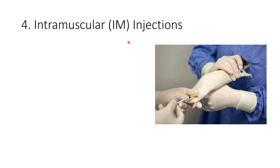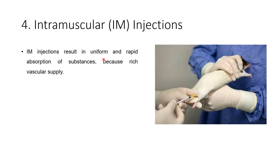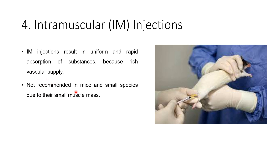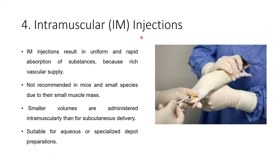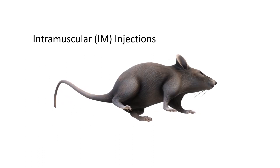The last is intramuscular injection. Intramuscular injection results in uniform and rapid absorption of substances due to the rich vascular supply. It is not recommended in mice and small species due to small muscle mass, but can be used in rats. Smaller volumes are administered intramuscularly than subcutaneously. It is suitable for aqueous or specialized depot preparations. The injection is given directly into the muscle. This covers all the different routes of administration of drugs in rats and mice.